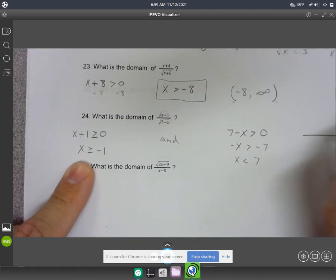So, like on a number line, it would be negative 1 to 7. You would include negative 1, but you cannot include the number 7. It would be like that.